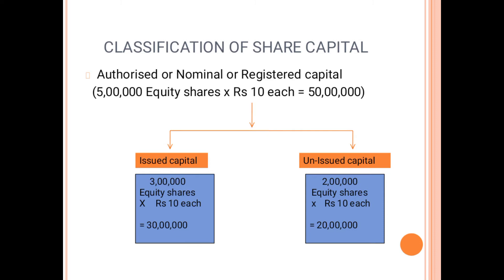We have taken one example. Suppose ABC Company Limited wants to issue 5 lakh equity shares of Rs. 10 each. It means they will collect 50 lakh rupees. That 50 lakh rupees is their authorized capital, already mentioned in the memorandum of association. So that 50 lakhs is distributed into a number of shares, where every share's value is Rs. 10. The value printed on the share certificate is called the face value — that Rs. 10 is the face value.